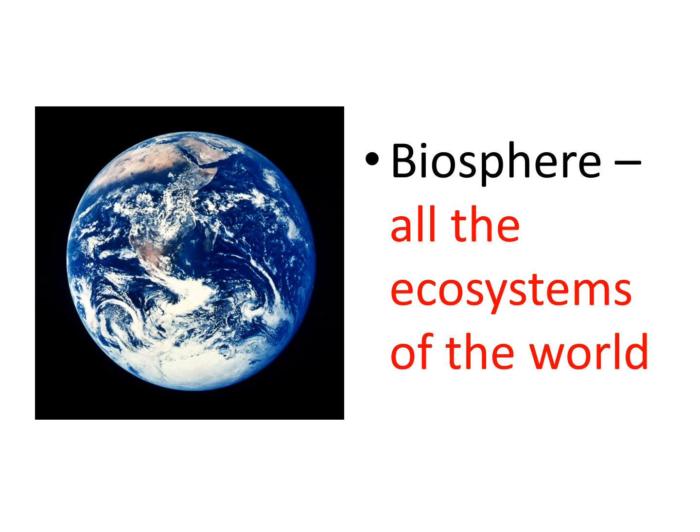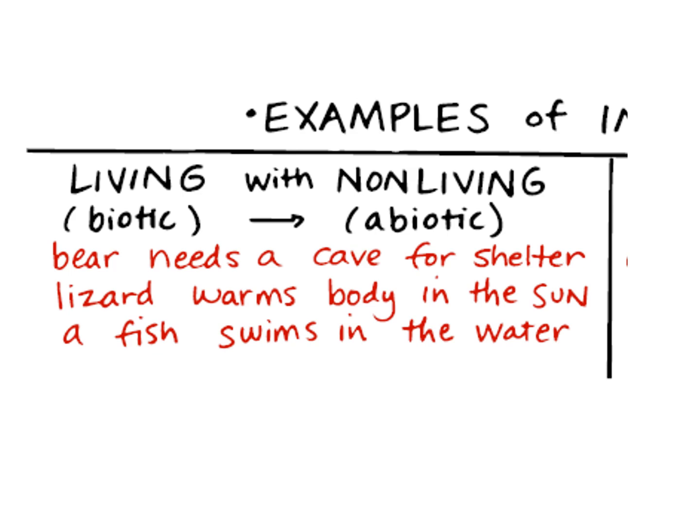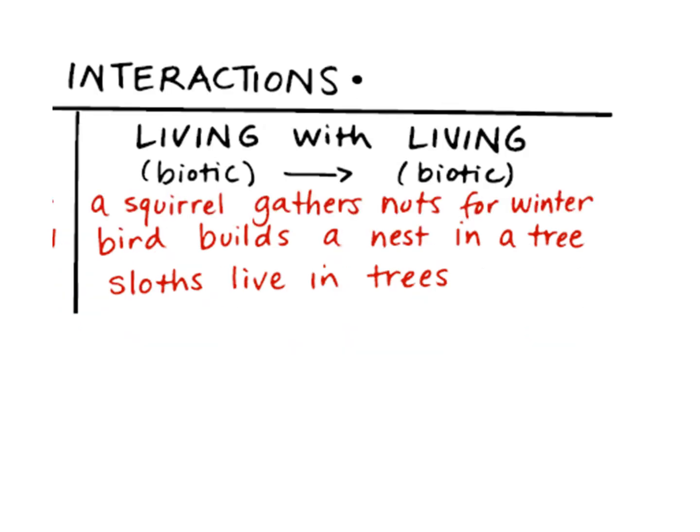During the fourth nine weeks, we'll talk about planets and the solar system and the galaxy and the universe. So in order: an organism is one individual, organisms make a population, several populations make a community, a community plus the abiotic makes an ecosystem, and then all the ecosystems make the biosphere. Here are some examples of living things with non-living things, and examples of living things with living things and how they depend on each other.